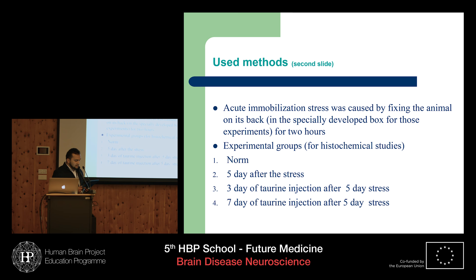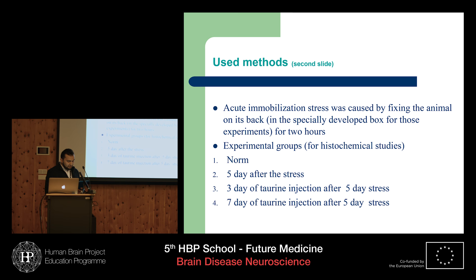Acute immobilization stress was caused by fixing the animal on its back in a specially developed box for the experiments for two hours. For histochemical studies, we decided to do experiments in four groups: the first is a control group norma, the second is five days after the stress, the third is three days of towering injection after five days stress, and the fourth is seven days of towering injection after five days stress.